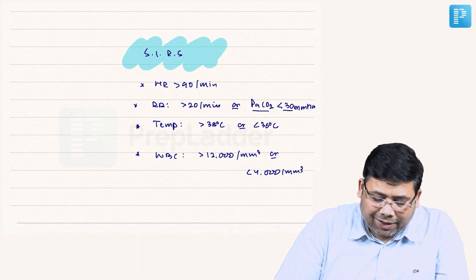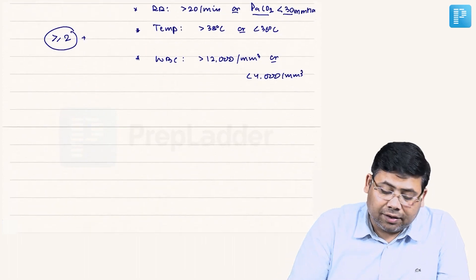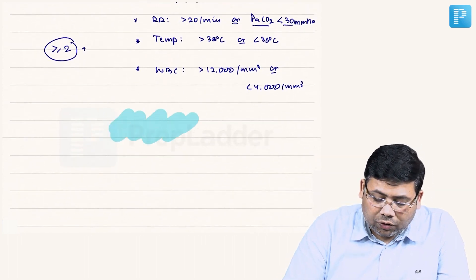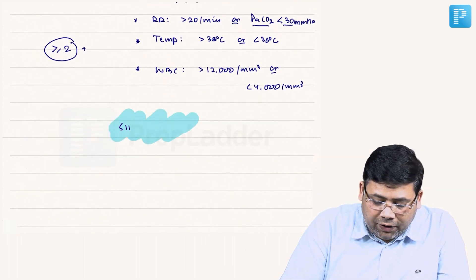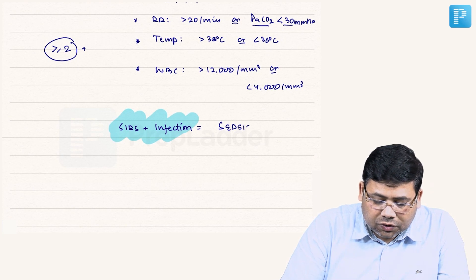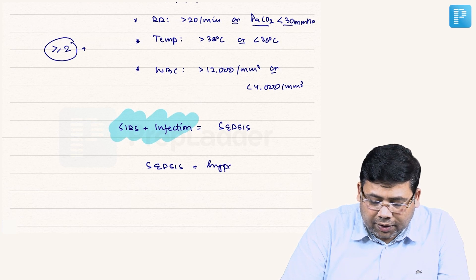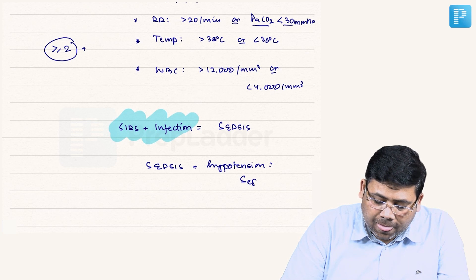Remember, the criteria is that if more than two parameters are positive, this is what is SIRS. Now, one more thing we should all know: if we add to SIRS the component of infection, this is known as sepsis. To sepsis, if we add hypotension, this is known as septic shock.